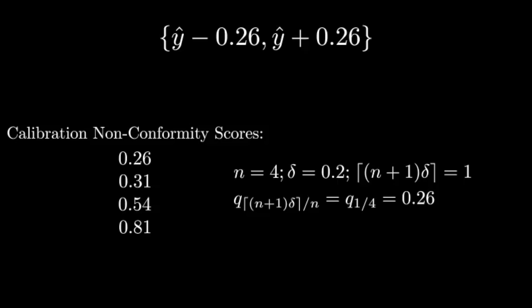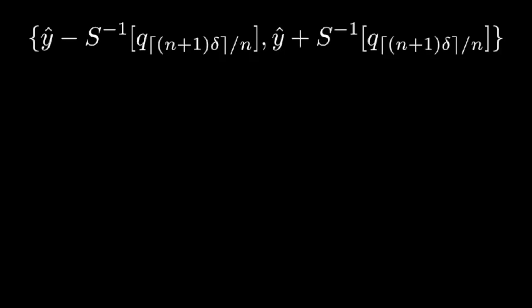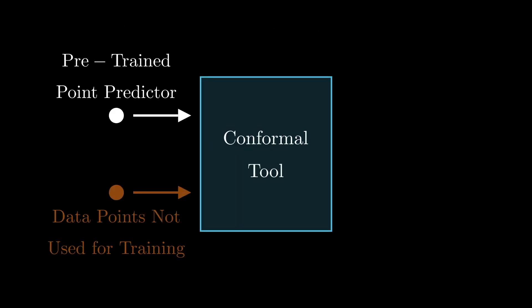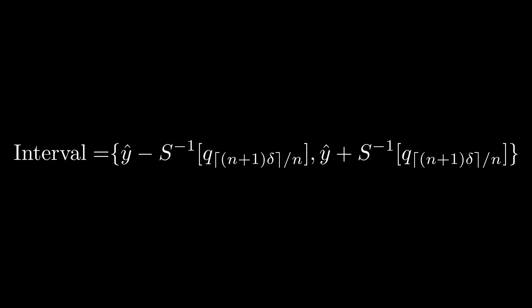I hope that with the discussion we just had, I was able to convince you that the equation we started with, despite its perhaps intimidating appearance, is not like that at all. Let's do a quick recap. We are given a pre-trained model and the set of labeled points that were not used for training. We want to convert that point predictor into a reliable interval predictor using an equation that we derived in the previous episode. We also discussed that unlike its complex look, the equation is in fact a very simple one. All it does is to pick the appropriate non-conformity quantile using the subscript, then passes that to the inverse of the non-conformity measuring function, and then adds and subtracts the result from the point predictor y hat.